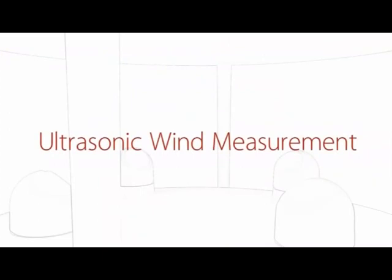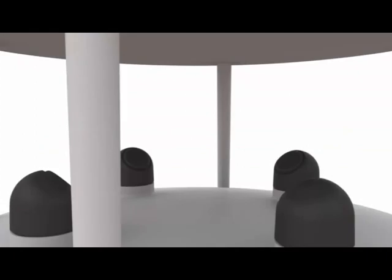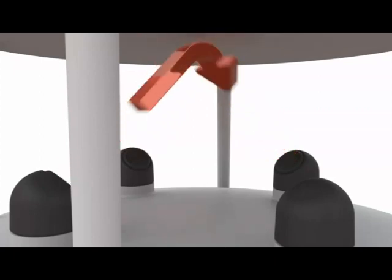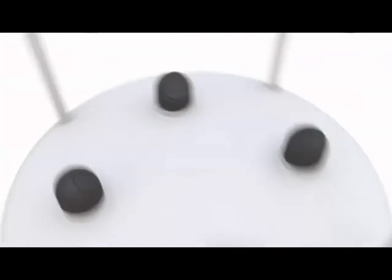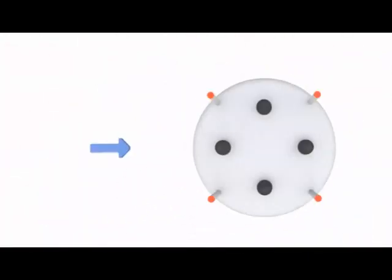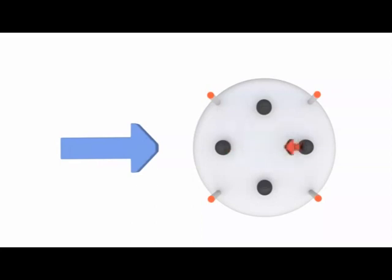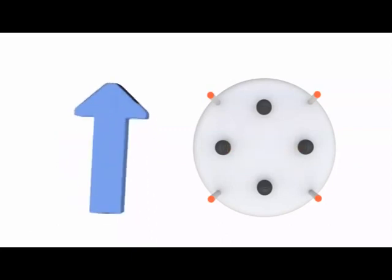Wind Sonic sensors use the ultrasonic time-of-flight principle to ascertain wind speed and direction. Opposing sets of transducers alternately send and receive ultrasonic pulses to each other. In still air these pulses travel at the same speed. The wind speed affects the send-receive pattern of the pulses — pulses in the direction of air movement will reach the opposing transducer more rapidly, whilst pulses into the wind will be delayed. The stronger the prevailing wind, the more prominent the effect will be.